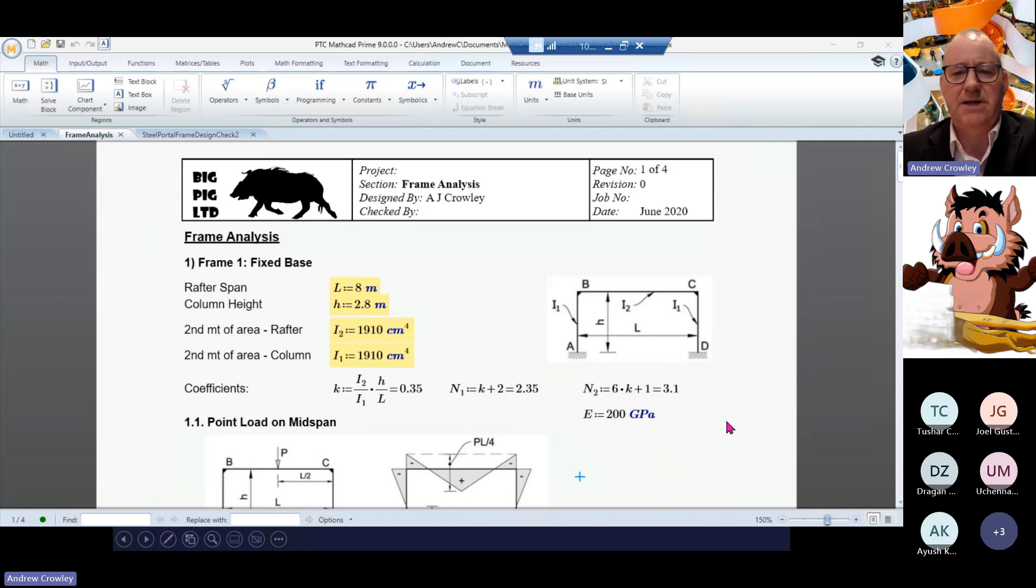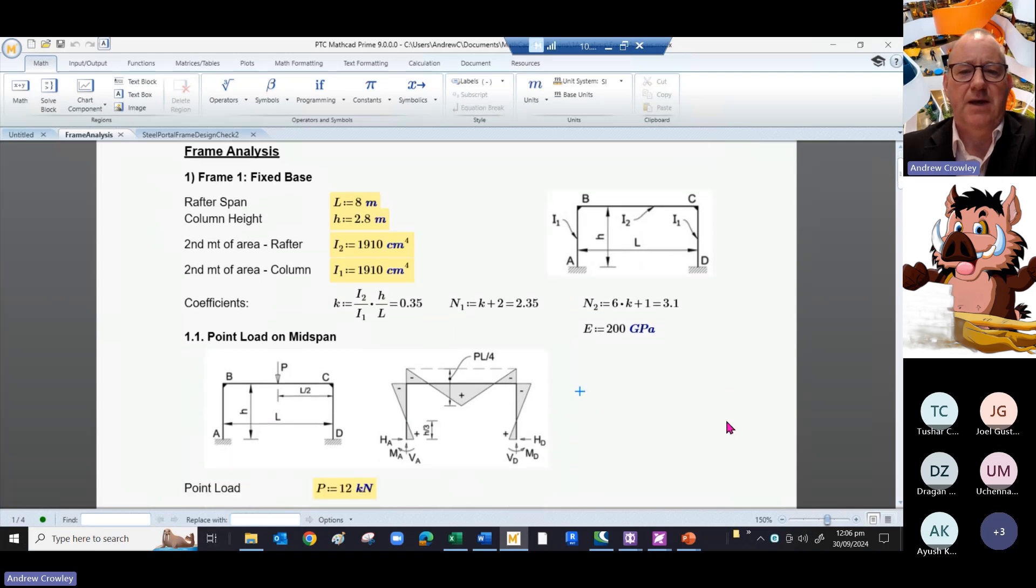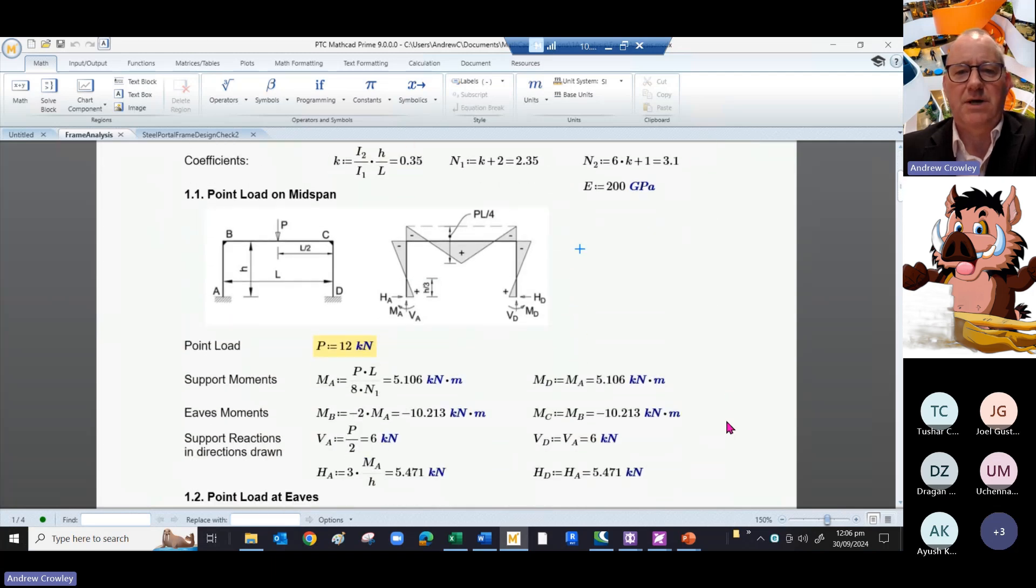You derive the coefficients from the Klein-Logel tables. And from that, depending on what kind of loading you've got and what kind of base support you've got, you can pop out the support moments in accordance with the formulas given. It's a relatively quick way of analyzing a frame.